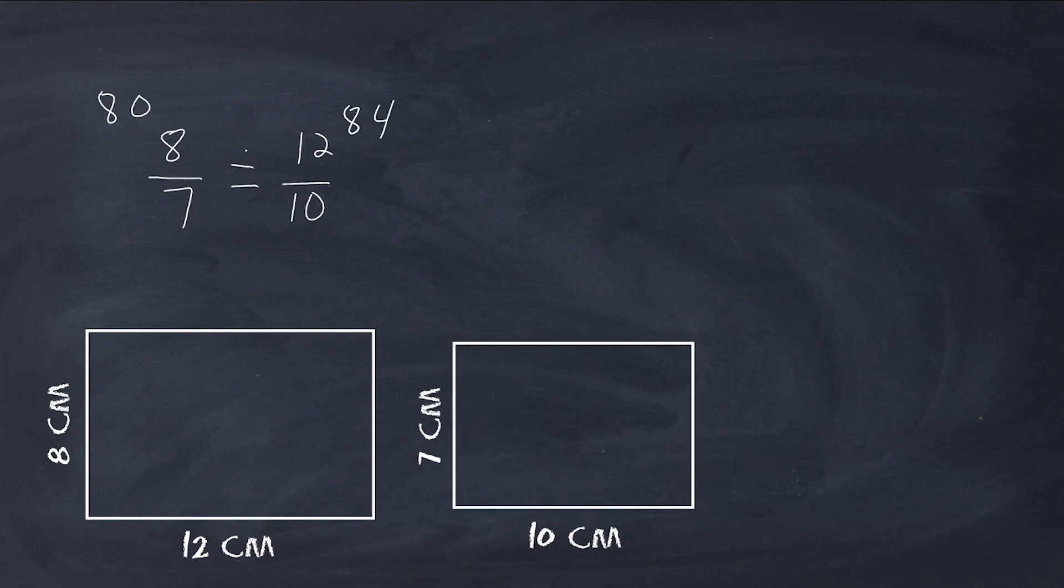So we can see that these rectangles are not similar to each other. Now just as triangles, the height of a rectangle as compared to its base, or base compared to height, it really doesn't matter in which order you go, should be identical to the same comparison of your other rectangle. For example, 8 as compared to 12, if it were similar to this triangle, would be equal to 7 compared to 10.